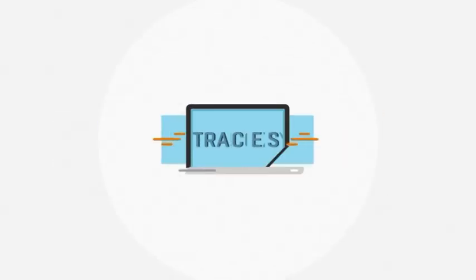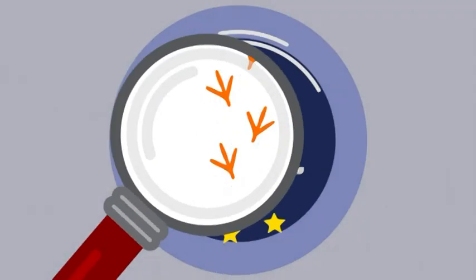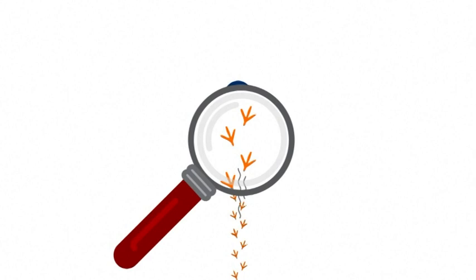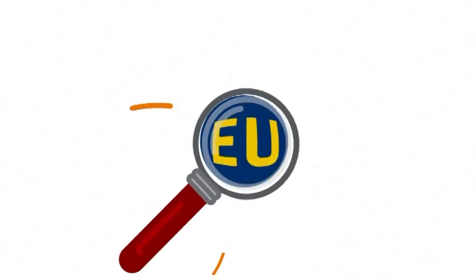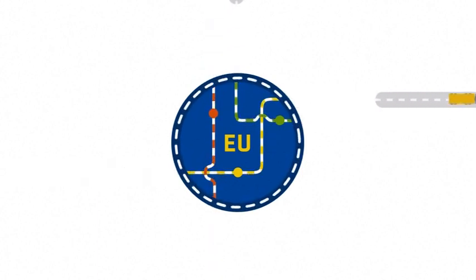The Trade Control and Expert System, known as TRACES, is an online management tool of the European Commission that tracks the movements of animals, food, feed and plants imported from outside the EU or travelling through the countries of the European Union.